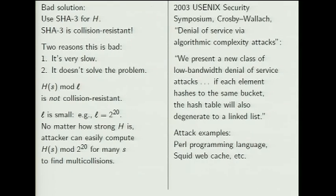This is not something easily solved, and it's been exploited repeatedly. In 2003, Crosby and Wallach presented what they called a new class of low-bandwidth denial-of-service attacks — algorithmic complexity attacks — noting that if each element hashes to the same bucket, the hash table degenerates to a linked list. They demonstrated attacks on Perl, the Squid web cache, and an intrusion detection system. And then there was the 28C3 result.